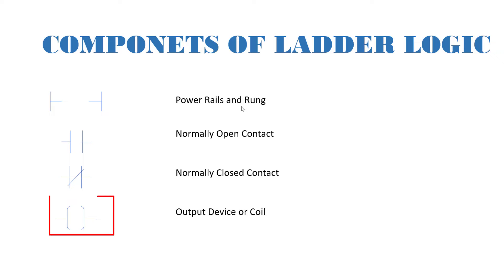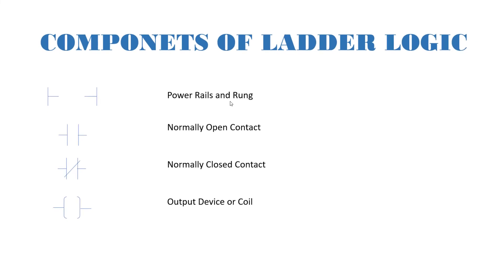And then we have our final one which always represents the output devices or also known as coils. It can be a contactor, it can be a relay, it can be a light bulb etc. So basically these are the four most important components in ladder logics.